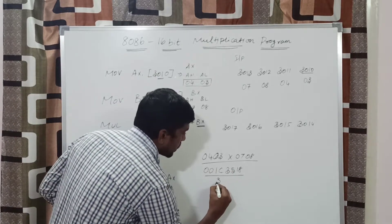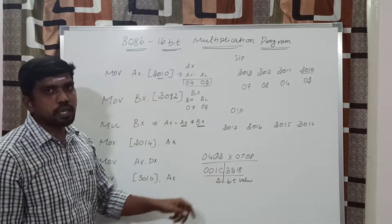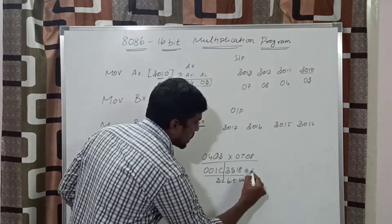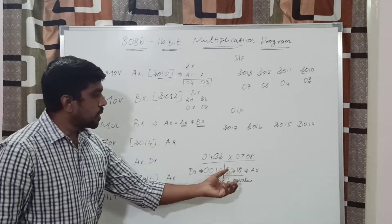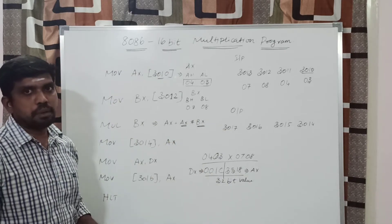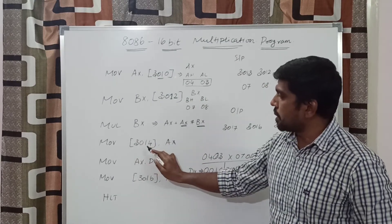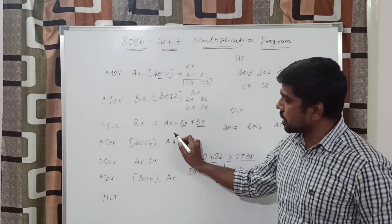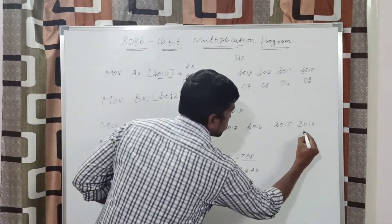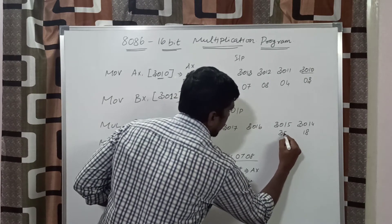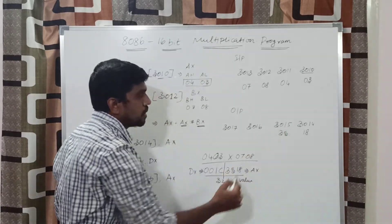This result is a 32-bit value. You split this result into two 16-bit values. The lower 16-bit value is transferred to the AX register and the upper 16-bit value is stored in the DX register. After that, you move the AX value and DX value into the output memory location. The next instruction is MOV [3014], AX. Whatever value is present in AX, that content is stored in memory locations 3014 and 3015. The AX value is 35 and 18 — 18 is stored in 3014 and 35 is stored in 3015.